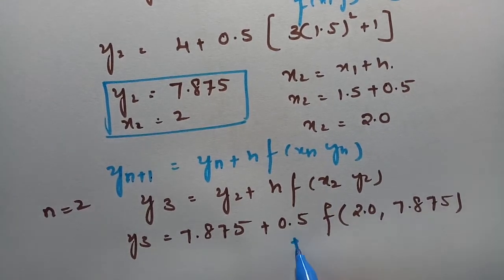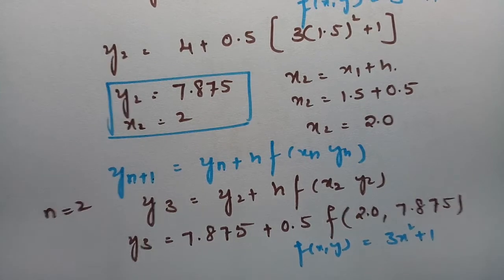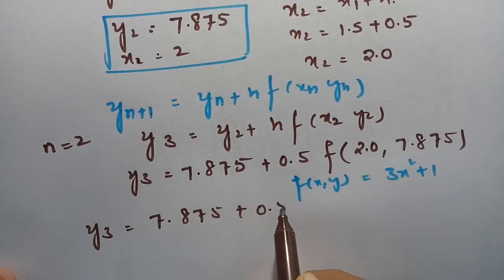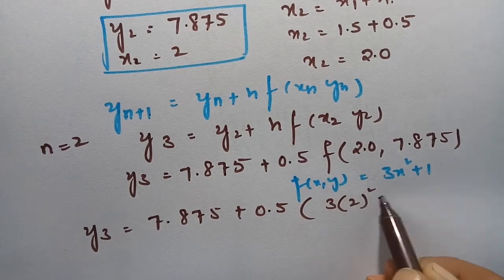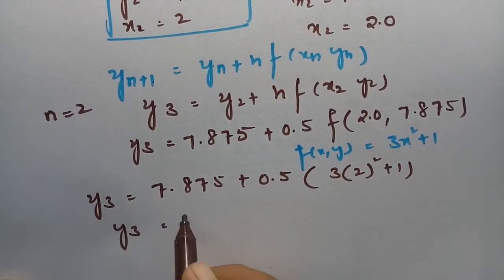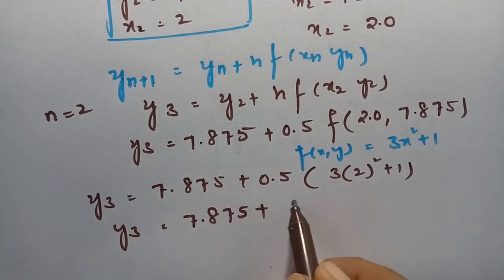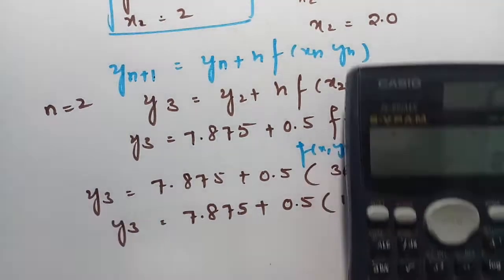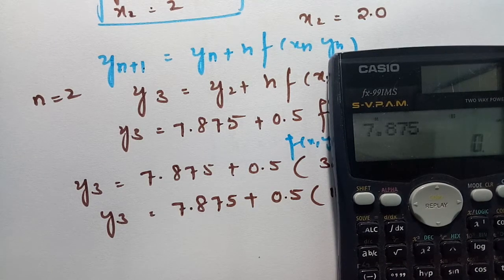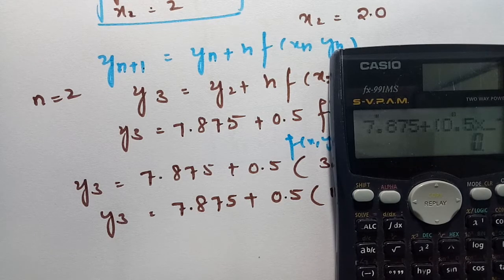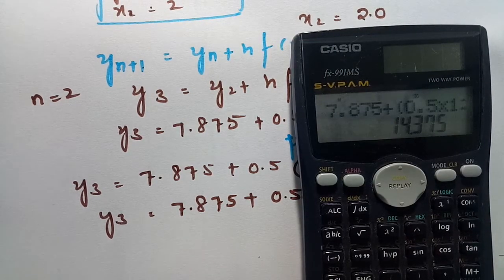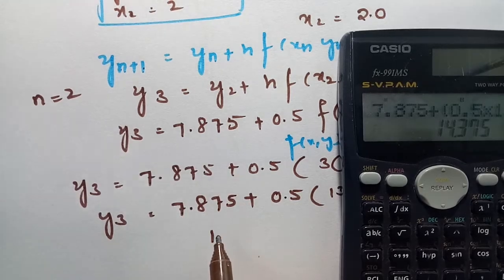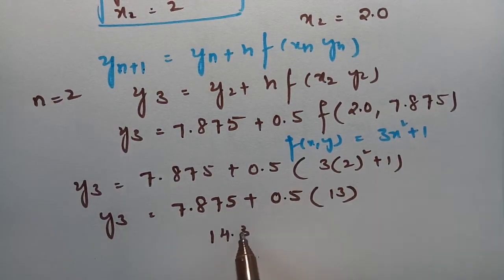According to our question, f(x, y) = 3x² + 1. Substituting: y₃ = 7.875 + 0.5 × (3 × 2² + 1). 3 × 4 = 12, plus 1 is 13. So y₃ = 7.875 + 0.5 × 13 = 7.875 + 6.5 = 14.375.